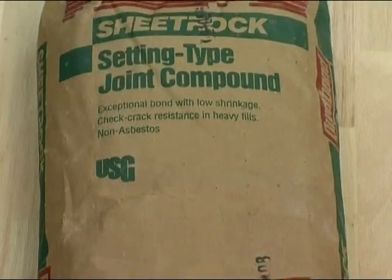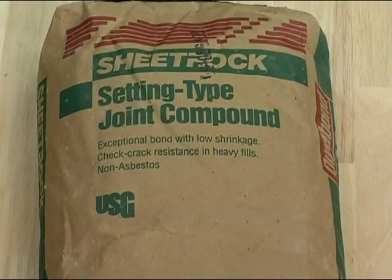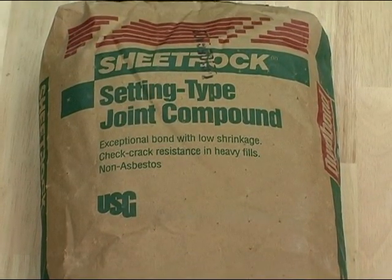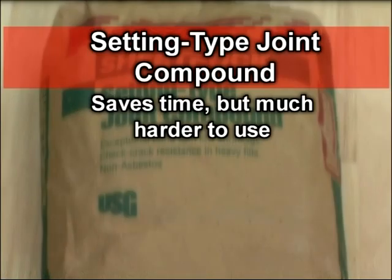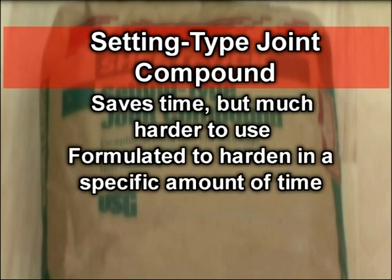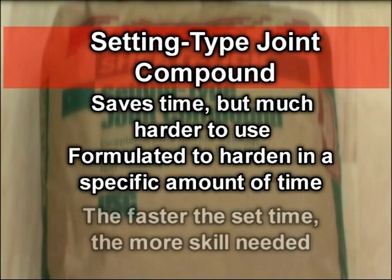Powdered joint compound, known as setting type, is used by a lot of drywall finishing experts because it hardens much more quickly than regular joint compound. This saves a lot of time on the project, but you really need to know what you're doing when you use it. Setting type compounds are formulated to harden in a specific period of time, usually 20, 45, or 90 minutes. The faster the set time, the more skilled you need to be.